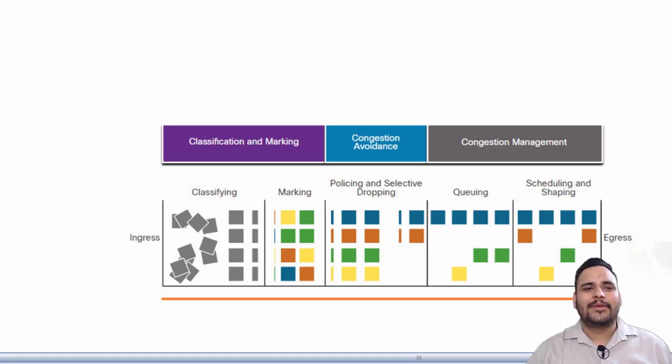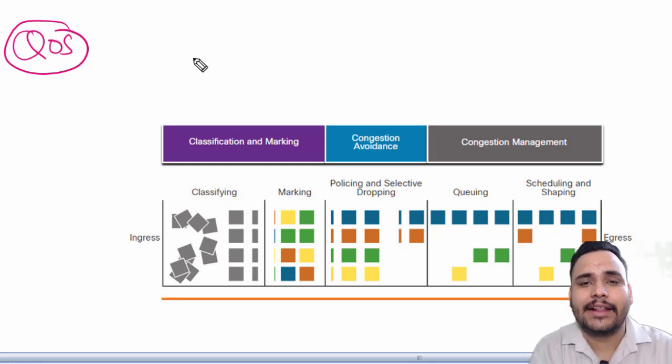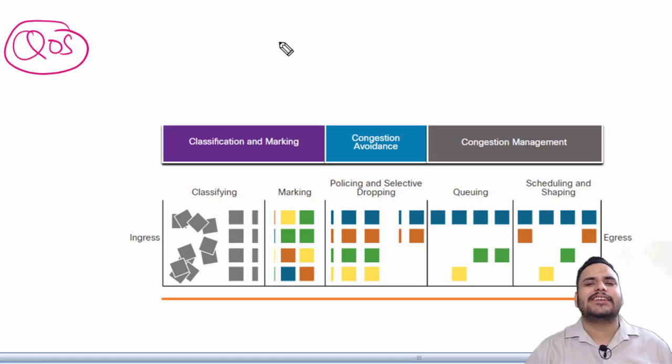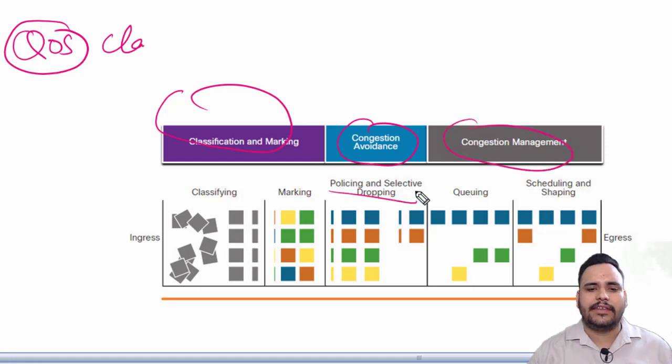Hello everyone, today we are going to discuss Quality of Service. We will explain the forwarding per-hop behavior for QoS, including classification and marking, congestion avoidance, congestion management, and policing.